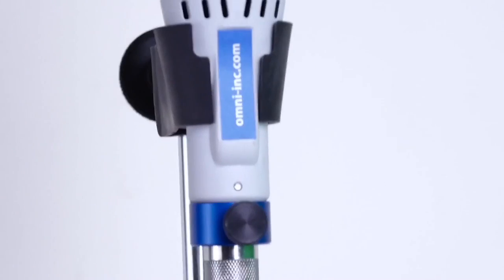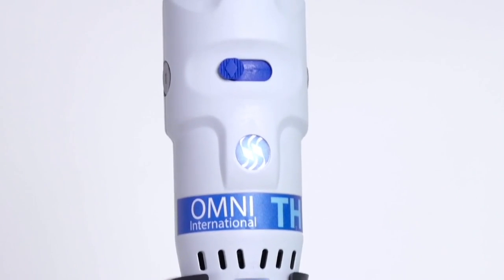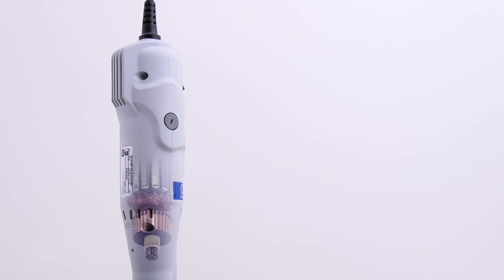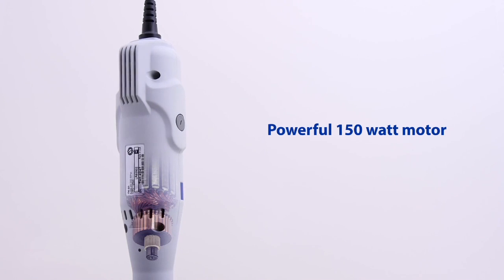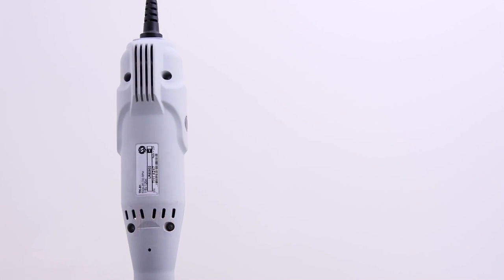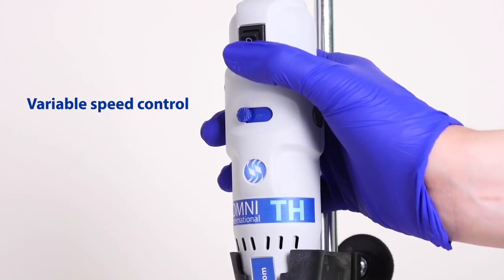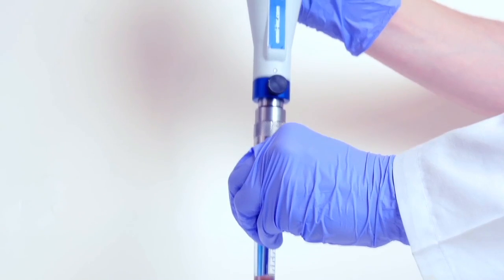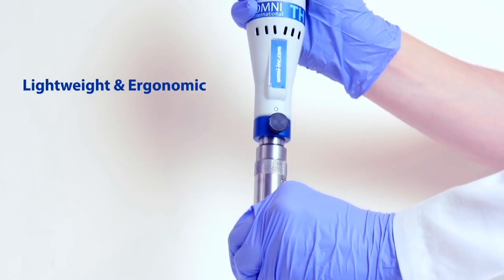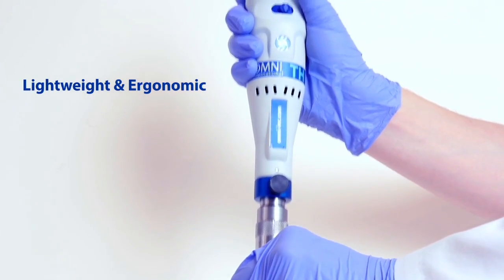The Omni TH tissue homogenizer is ideal for small-scale analytical laboratories. The TH features a powerful, compact 150-watt motor with variable speed control and separate on-off switch. The lightweight and ergonomic design make the TH a perfect fit for handheld operation.